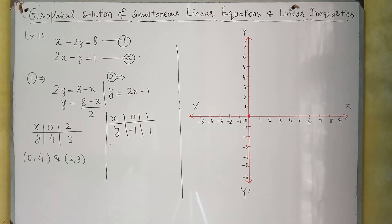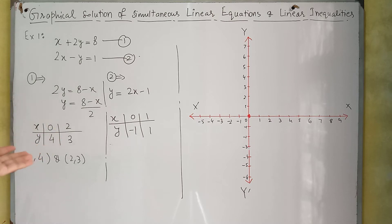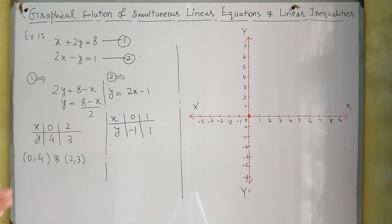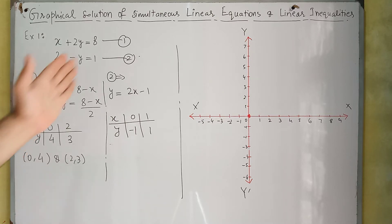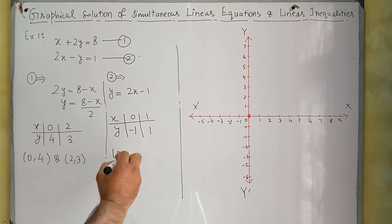When choosing values of X, we are free — in equation 1 we selected 0 and 2, and in equation 2 we selected 0 and 1. There is no hard and fast rule for this selection; we can choose any number. But try to choose smaller numbers so that we can plot the graph within this coordinate system, because if we choose a number greater than 10 or 20, we would have to modify the coordinate system.